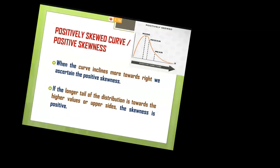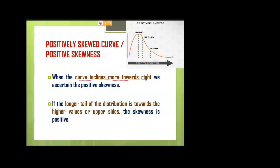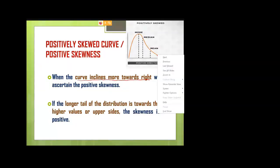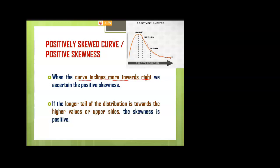When the curve inclines more towards the right, the tiles of the curve lie more towards the right side — this is called positive skewness. The tail area lies on your right side, like your right hand. Therefore, it is called positive skewness, which is represented with a plus symbol.